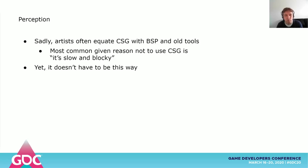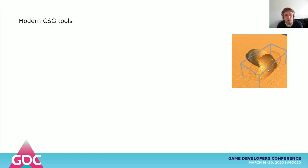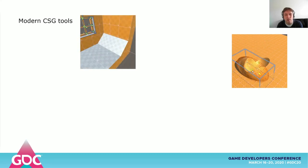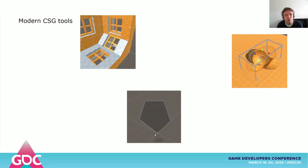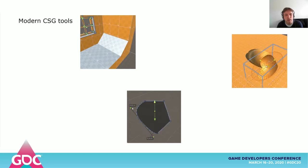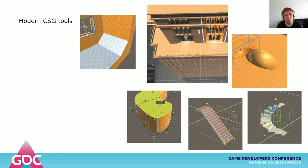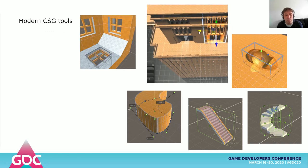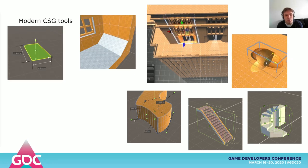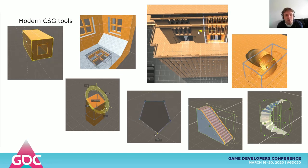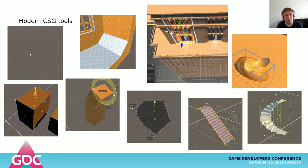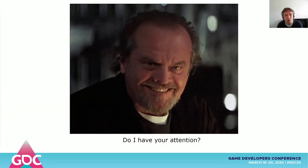Sadly, CSG has perception problems. Artists often equate CSG with BSP and old tooling. The most common reason given to not use CSG is that it's slow and blocky — yet it doesn't have to be this way. It doesn't have to be blocky. It can be used to drag and drop prefabs including holes, and have tooling that allows you to create more complicated shapes. Notice this image: it's a little scene with more than 7000 brushes in it and it's real time. Being able to draw on any shape and extrude allows you to quickly build your level, and you can still edit brushes like in the olden days, but with real-time feedback. Hopefully, I've got your attention.